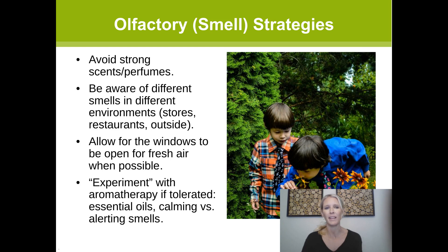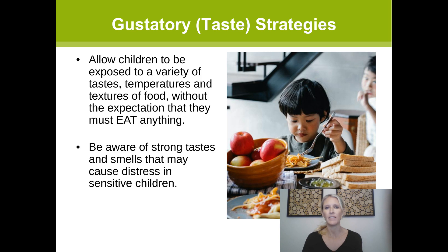Moving on to our sense of taste, or gustatory sense. We all have preferences for certain tastes — for example, the herb cilantro tastes refreshing to some people but like soap to others. We want to allow children to experiment with different tastes and give them permission to dislike certain flavors. Sensory issues related to feeding or picky eating are extremely common, particularly in the autistic population. The first strategy is allowing children to be exposed to a variety of tastes, temperatures and textures without necessarily expecting them to eat anything. We should also be aware of strong tastes and smells like spicy foods that might cause distress.